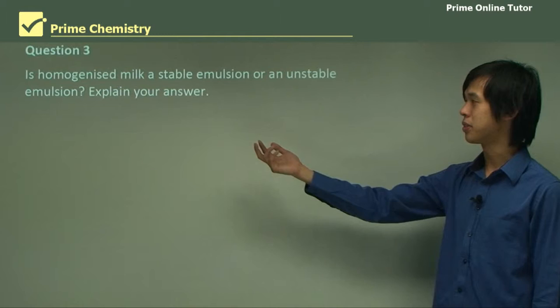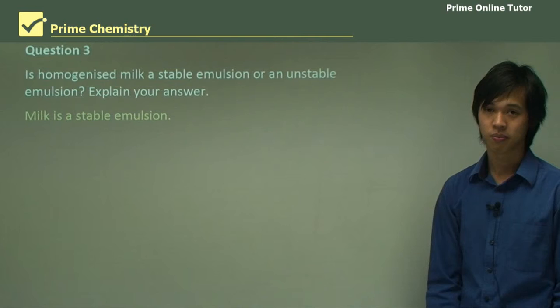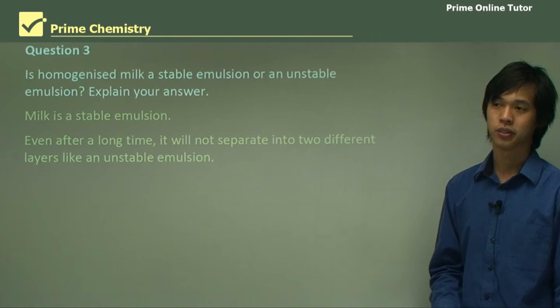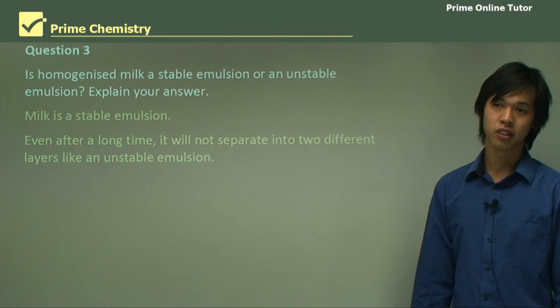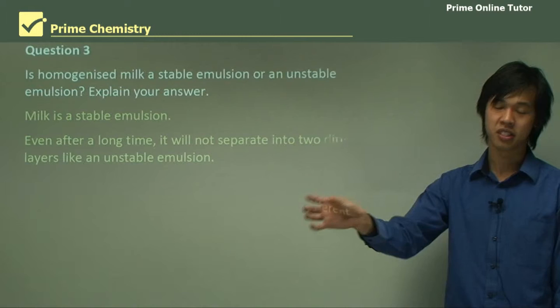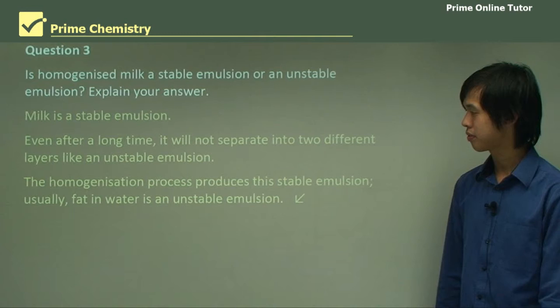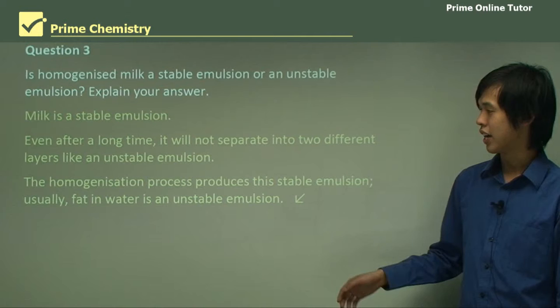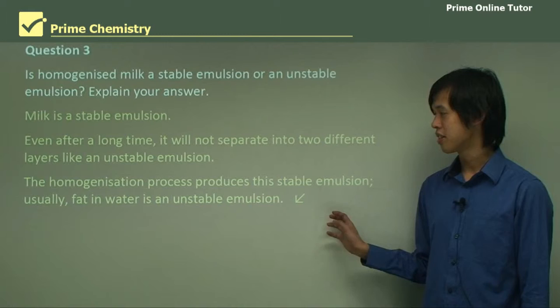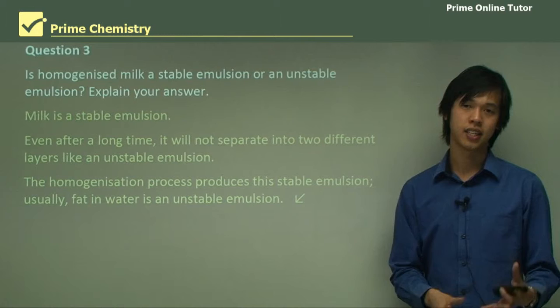Question: is homogenized milk a stable or unstable emulsion? Milk is a stable emulsion — even after a long time it won't separate into two different layers. If you poured milk and left it on the bench for an hour or two on a cool day, it would still be drinkable and would not separate into different layers. The homogenization process produces this stable emulsion from fat and water, which would otherwise form an unstable emulsion.